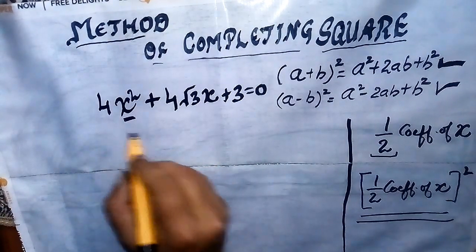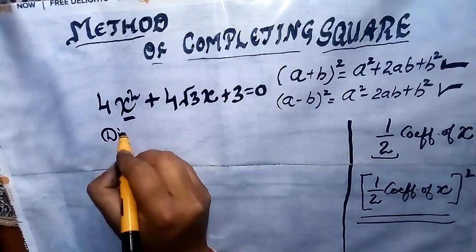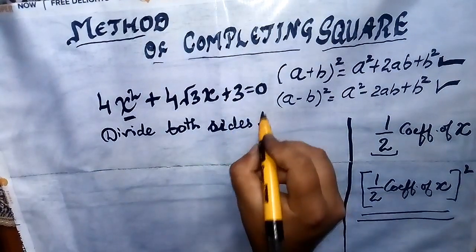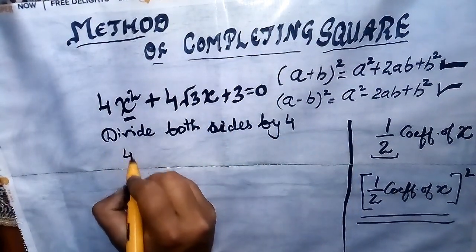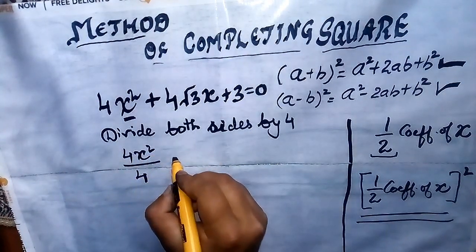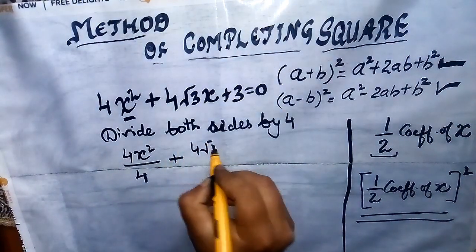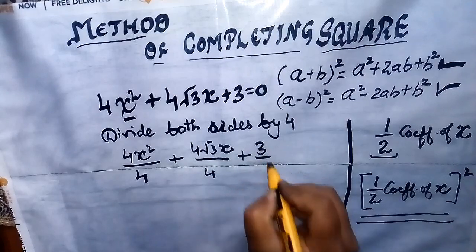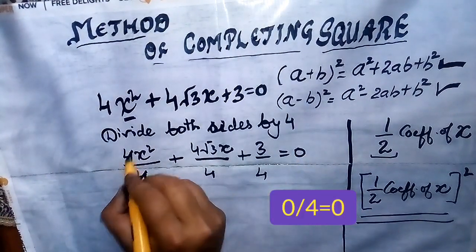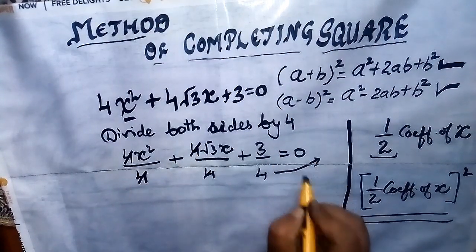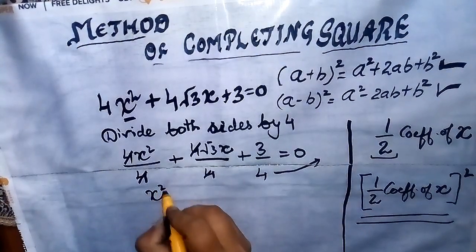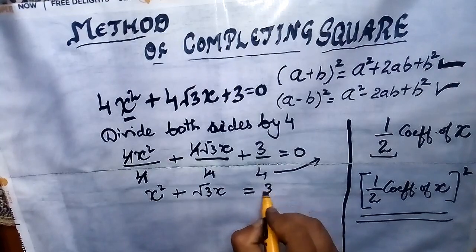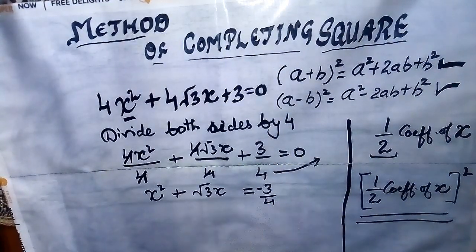The first step is to divide both sides of the equation by the coefficient of x², which is 4. Dividing each term separately: 4x²/4 + 4√3 x/4 + 3/4 = 0. Cancel 4 in the first two terms. Now the second step is to take the constant term 3/4 to the right side. The left side becomes x² + √3 x and the right side becomes -3/4.